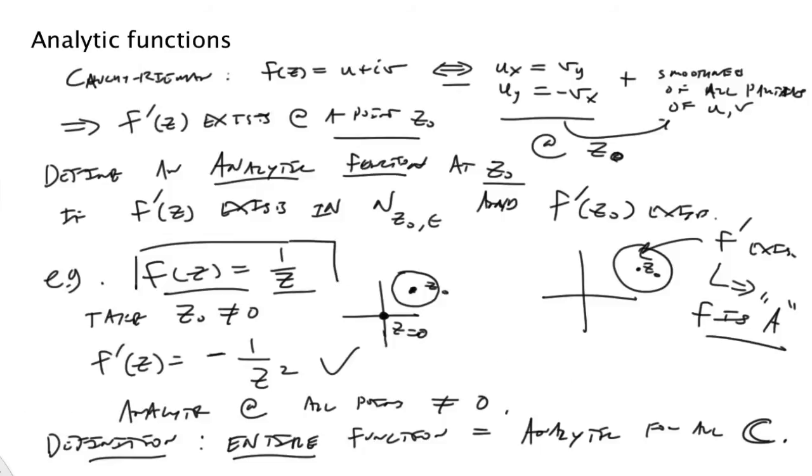But now, of course, we have other examples. The function f of z is equal to z squared. That's an example. And clearly, f prime of z is equal to two z, using our standard derivative formulas. And so we say then that f is entire.